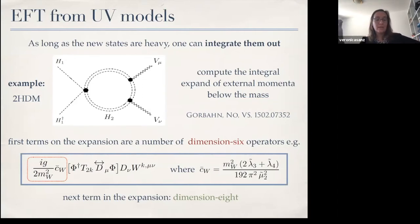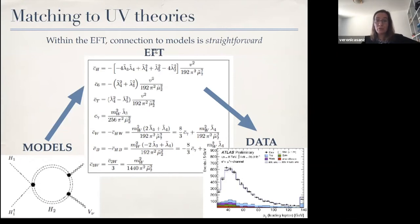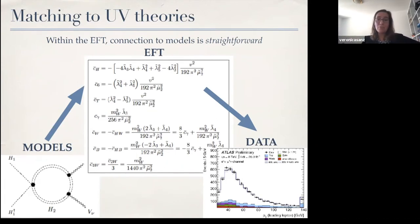Integrating out a heavy particle — say in a two-Higgs-doublet model — gives the leading dimension-six operator with a specific coefficient; the next order in p-squared gives dimension-eight effects. Behind all the Cs and complexity, there are specific models that are the real targets. The connection between SMEFT and specific models is straightforward for theorists: we can compute observables in SMEFT and compare with data, and we can compute SMEFT coefficients from models and also compare them with data.